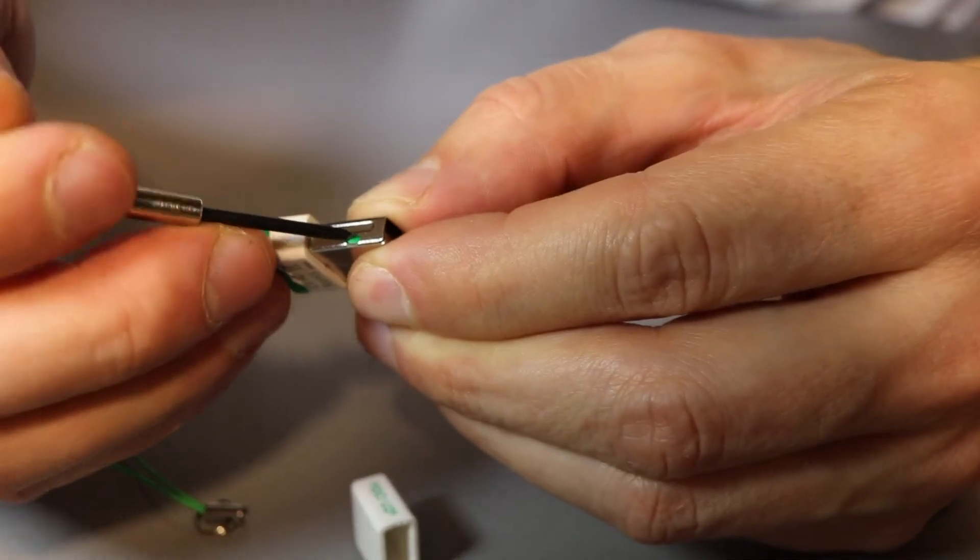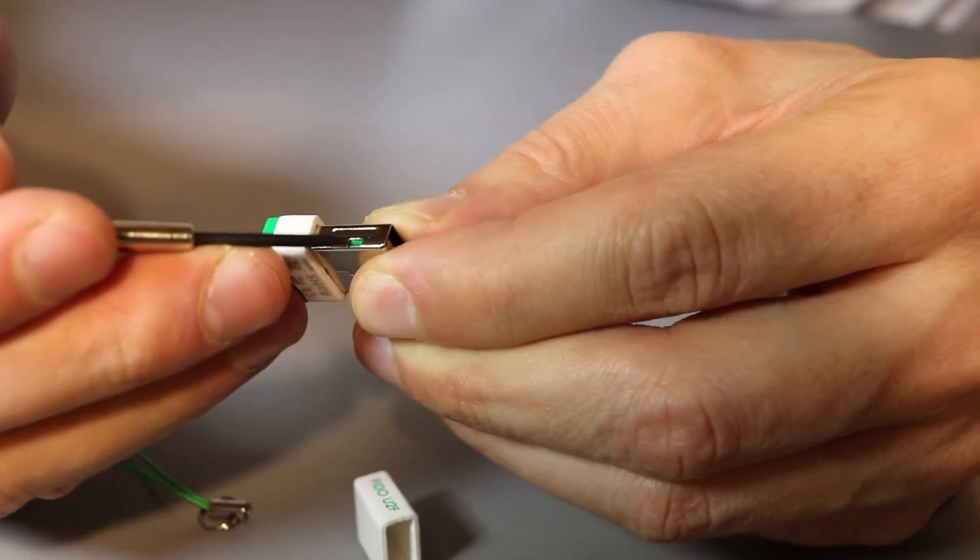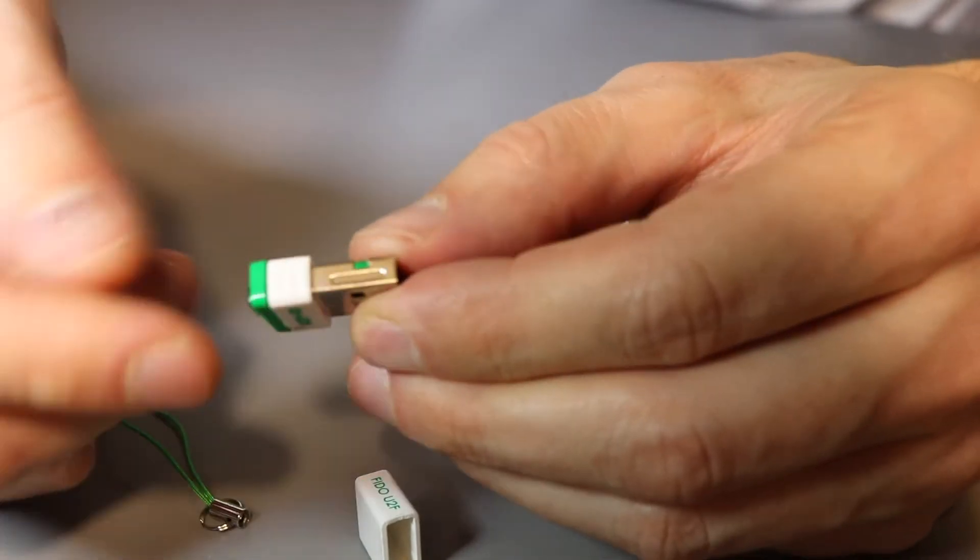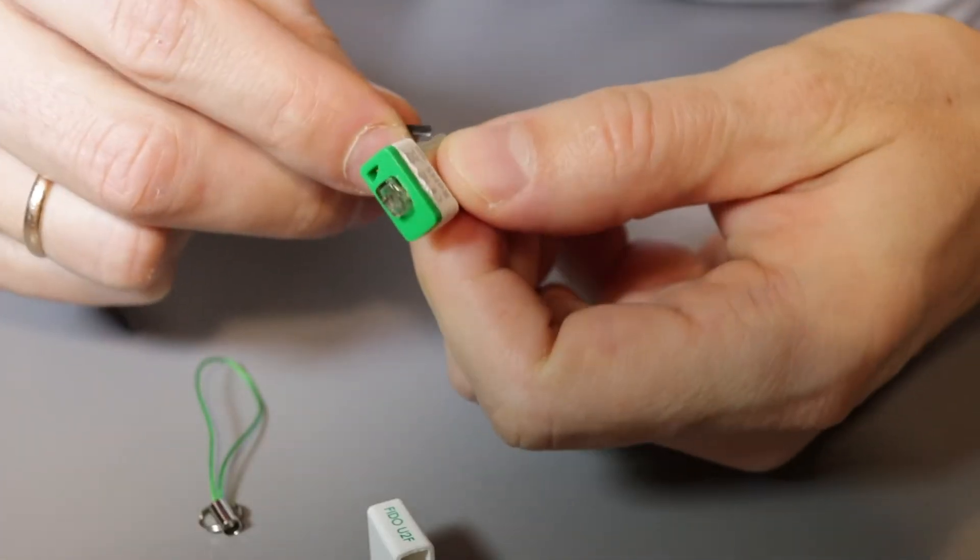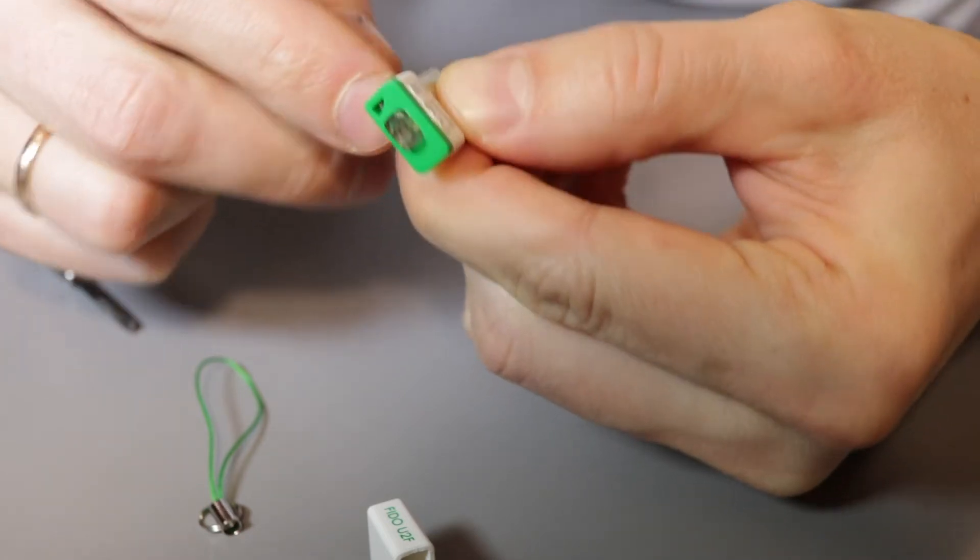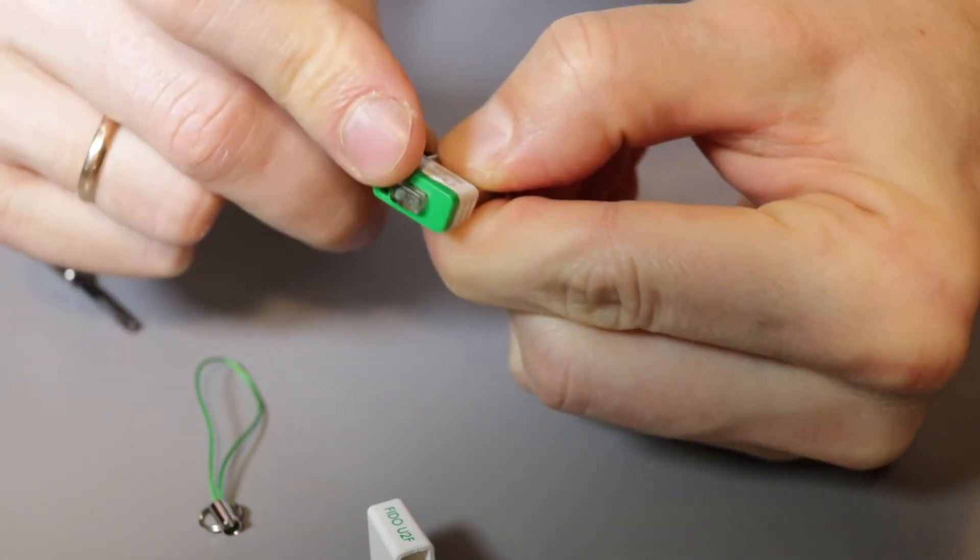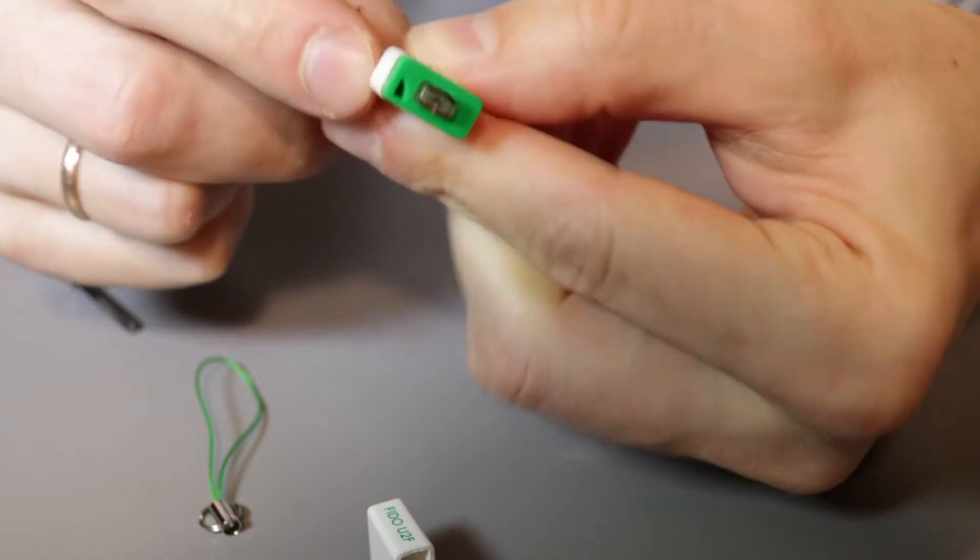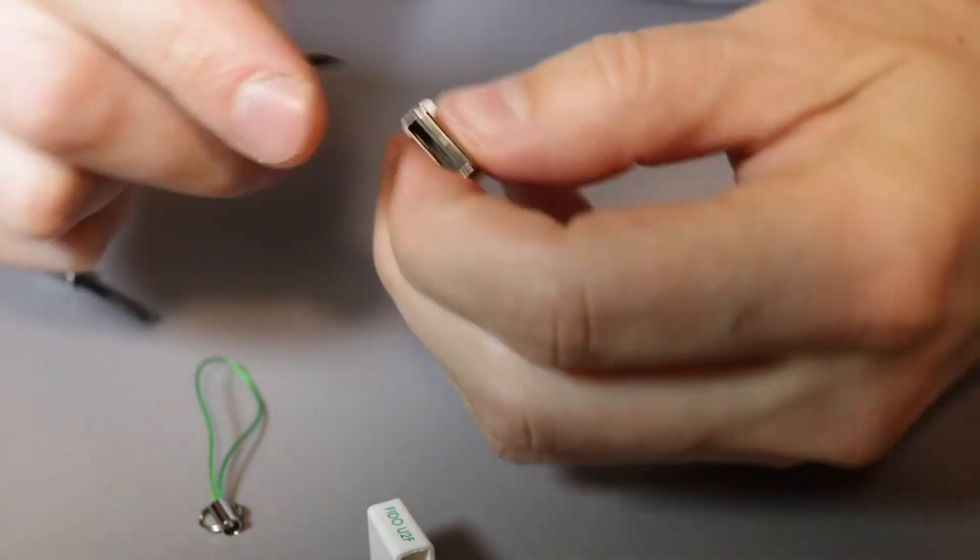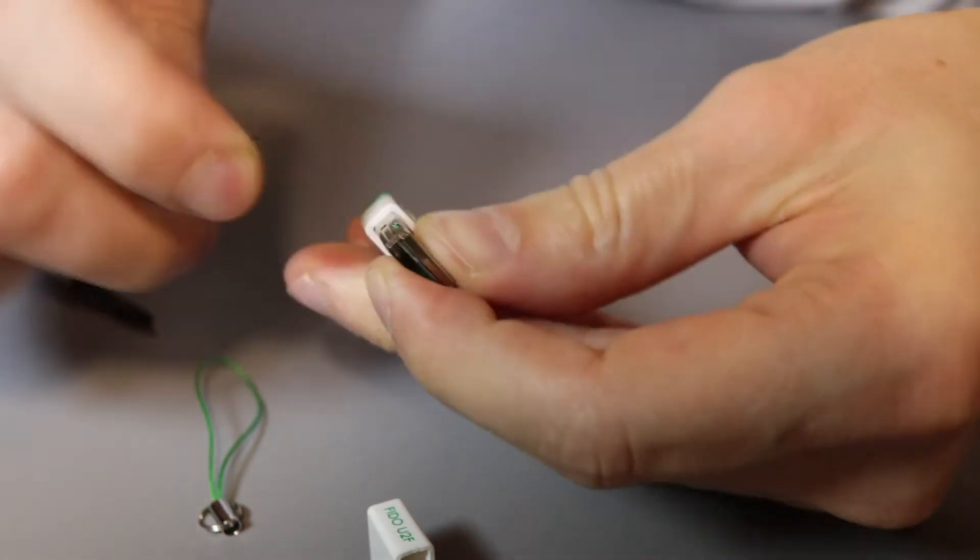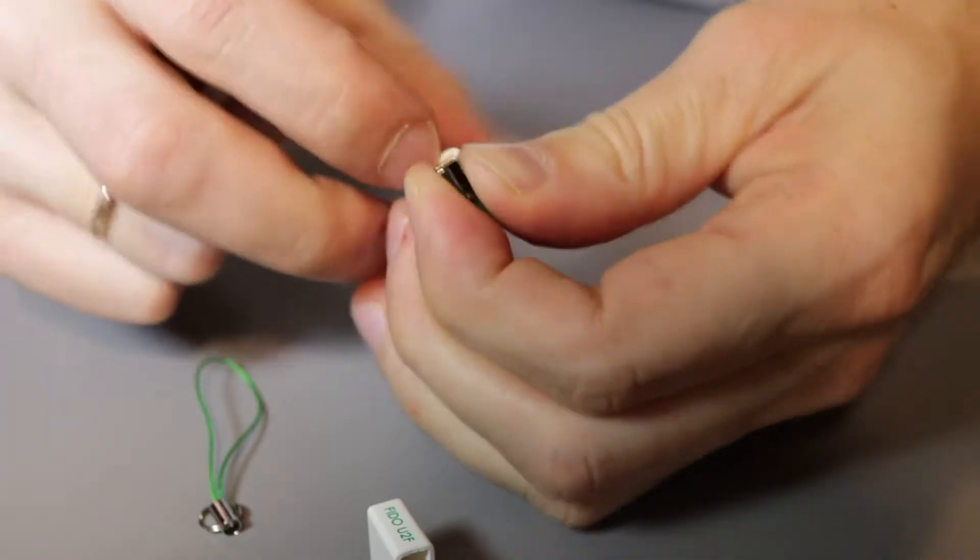So everything is held in place by these two retainers on each side of that USB slot. So you just press on those retainers on both sides of that USB case and slide that inner part out. So as if it was plugged into the computer, you would slide that inner part out of that element. It should come out easily.